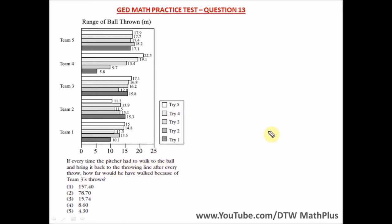Let's interpret this: if every time the pitcher had to walk to the ball and bring it back to the line after every throw. So let's say the pitcher is here, he throws the ball. This is a range of throw, a pitcher throwing the ball, and you have several teams.